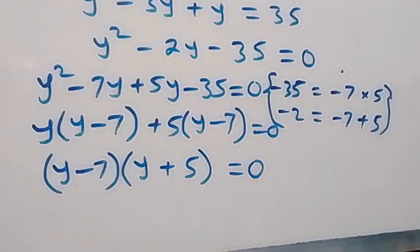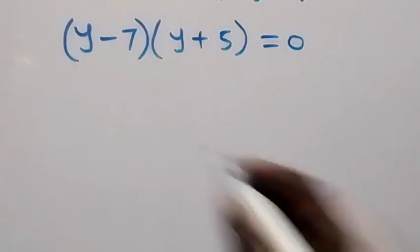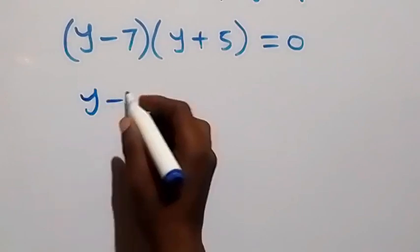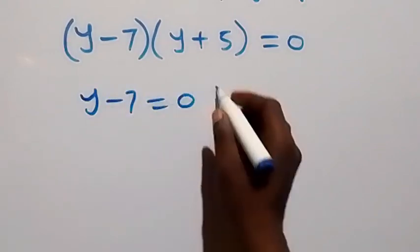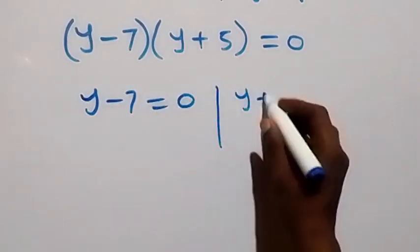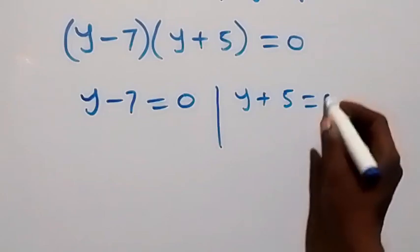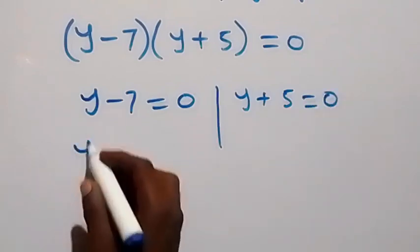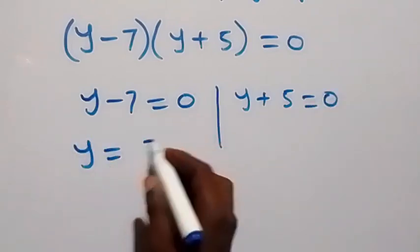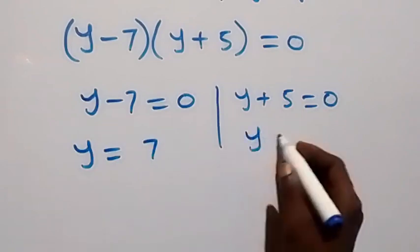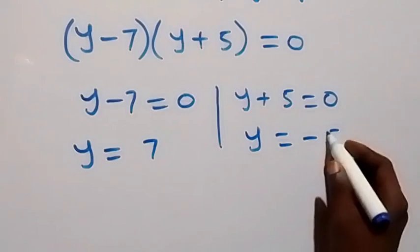The two cases we have are: y minus 7 equals to 0, or y plus 5 equals to 0. That means y equals to 7, or y equals to minus 5.